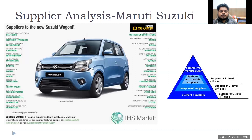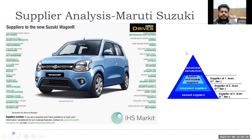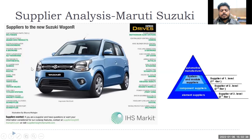Looking at Maruti's supplier list for one product, the new Suzuki WagonR, there are different companies supplying different components — Midas and Sumitomo being big companies. Different companies supply different kinds of components, and a single supplier like Continental might supply for other models of Maruti as well. How do you categorize those suppliers?